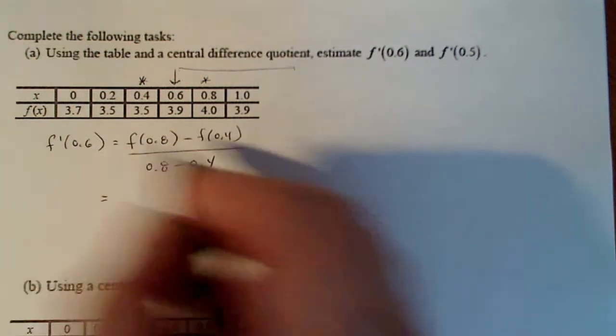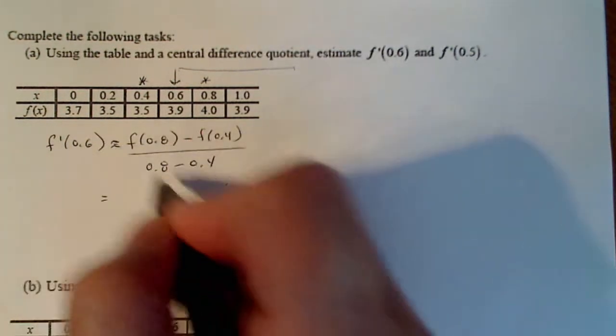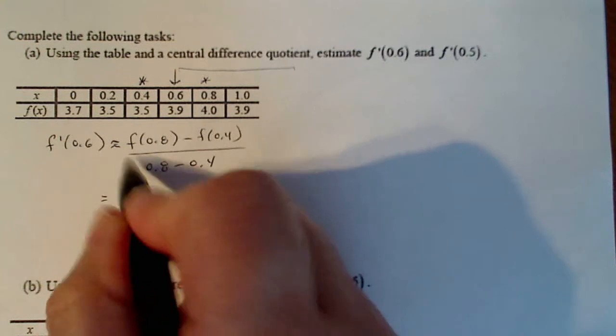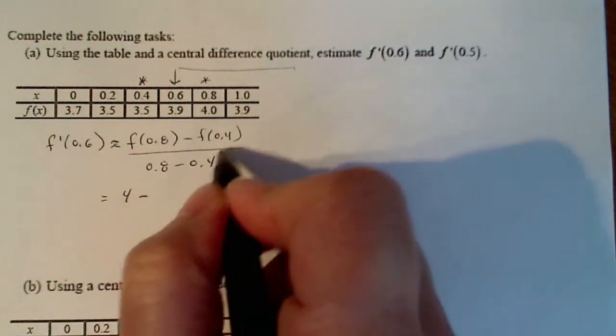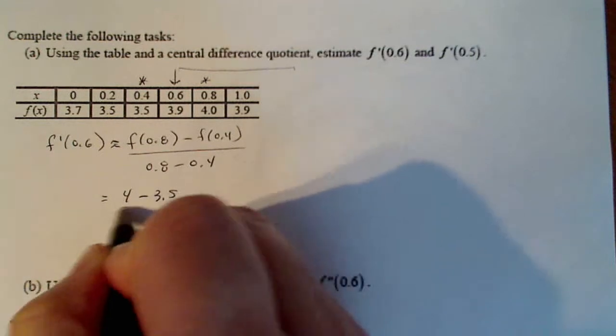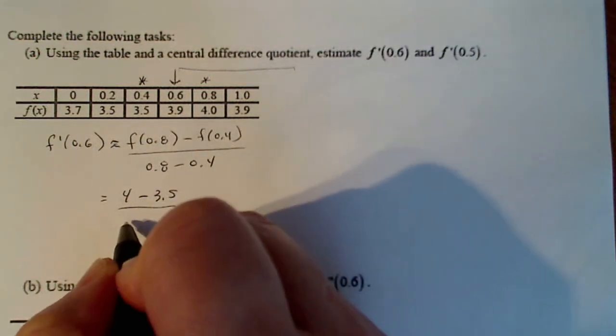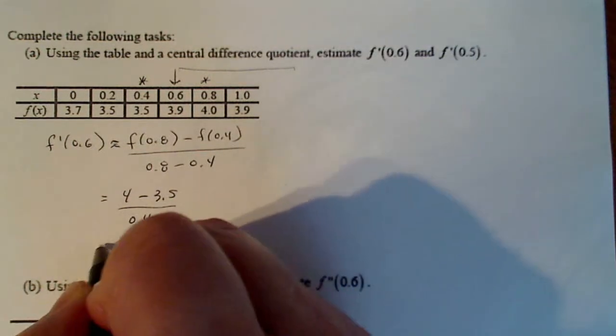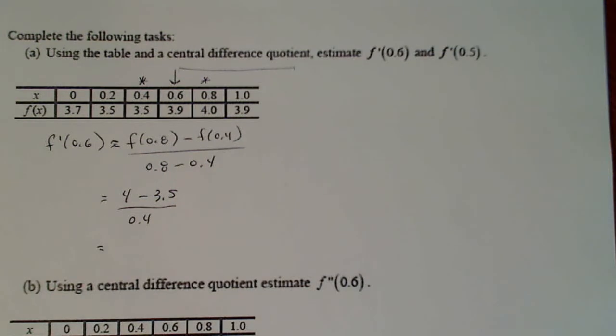So that's going to be f of 0.8 minus f of 0.4 divided by 0.8 minus 0.4. So let's finish this one off real quick. It's an approximation to 0.8, f of 0.8 is 4, f of 0.4 is 3.5.